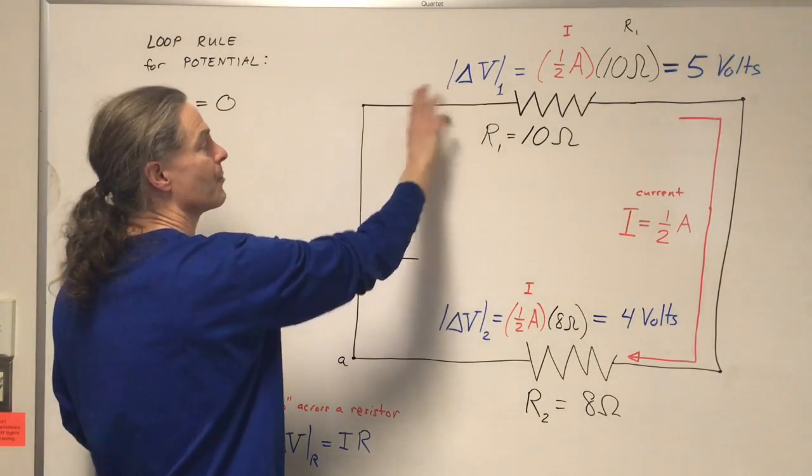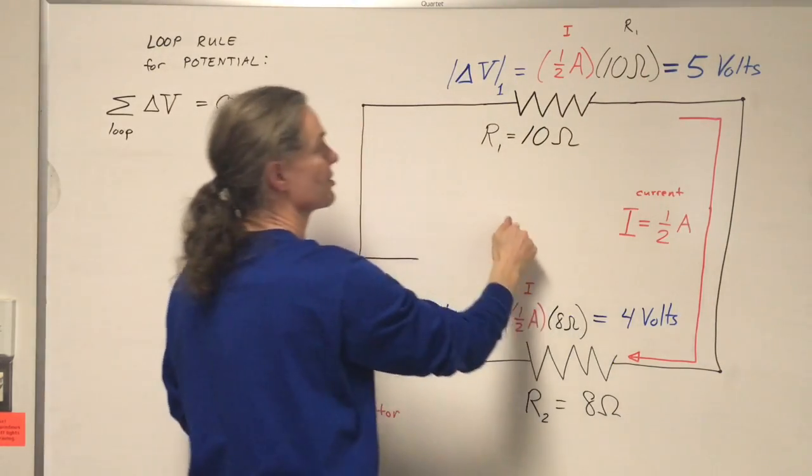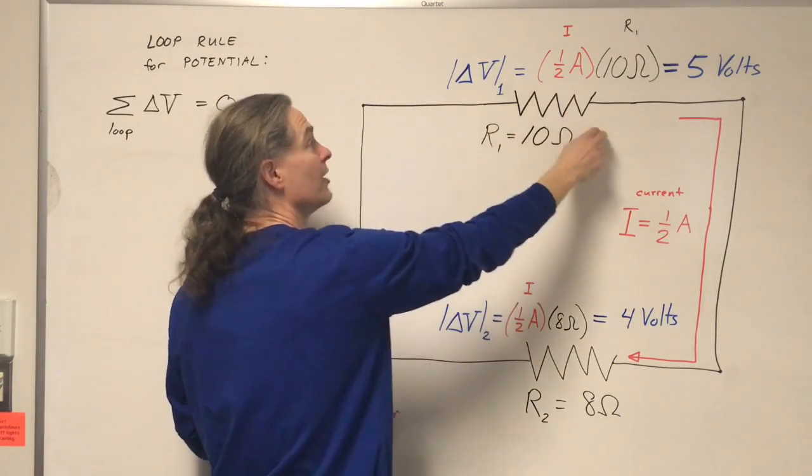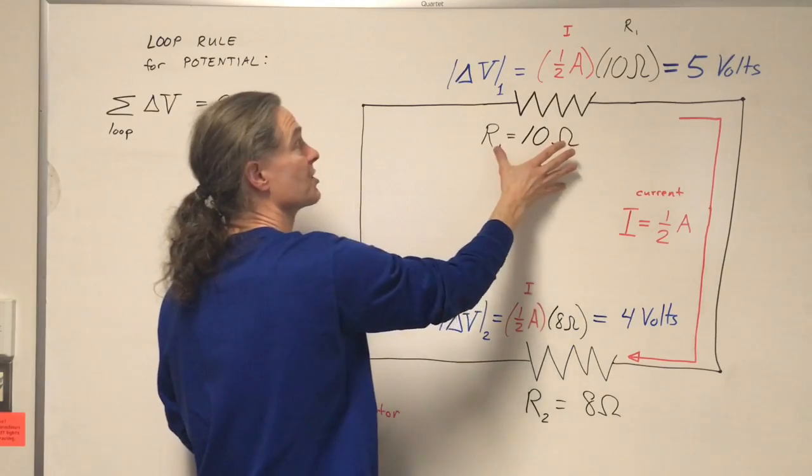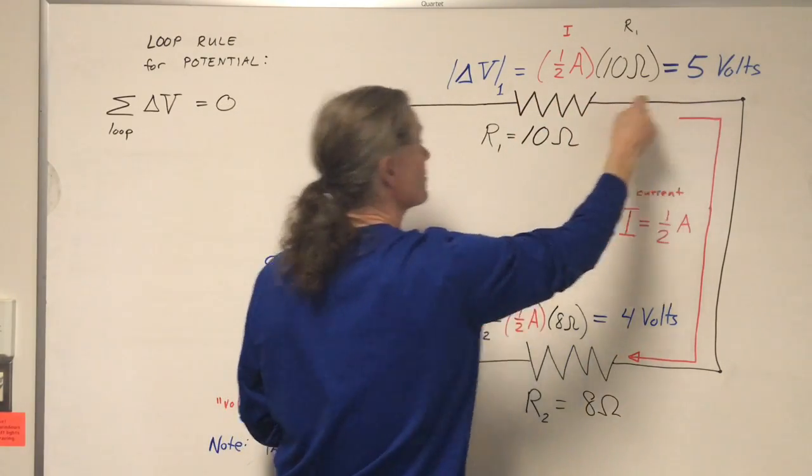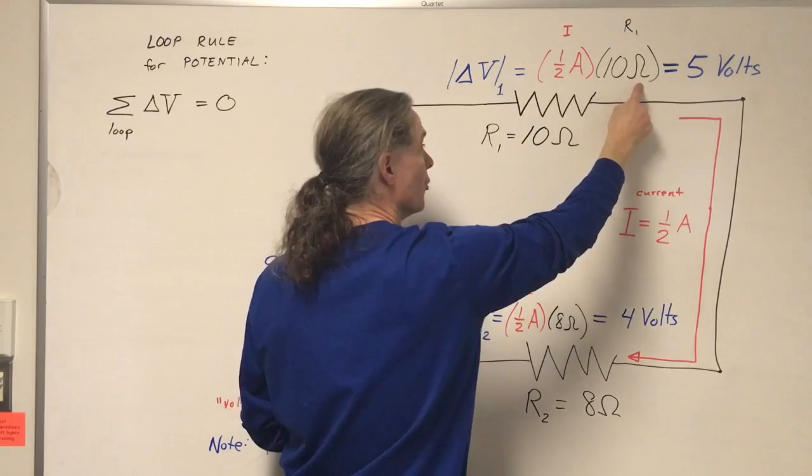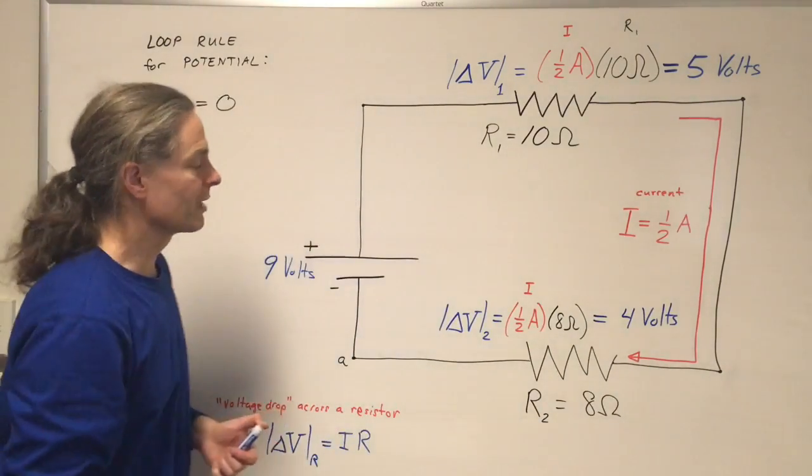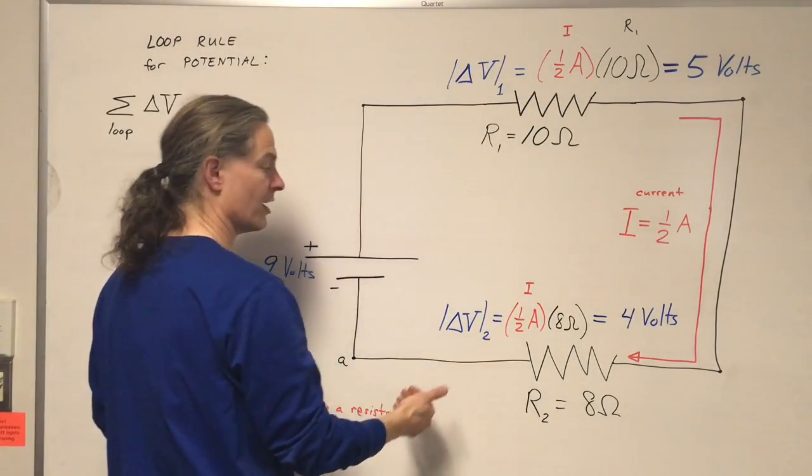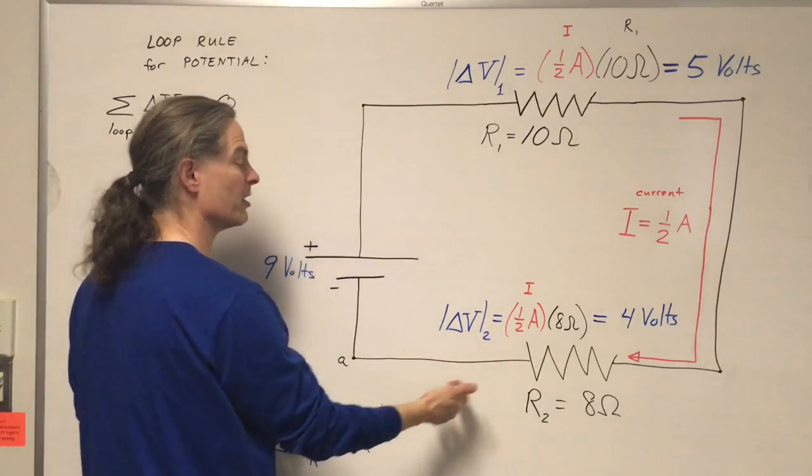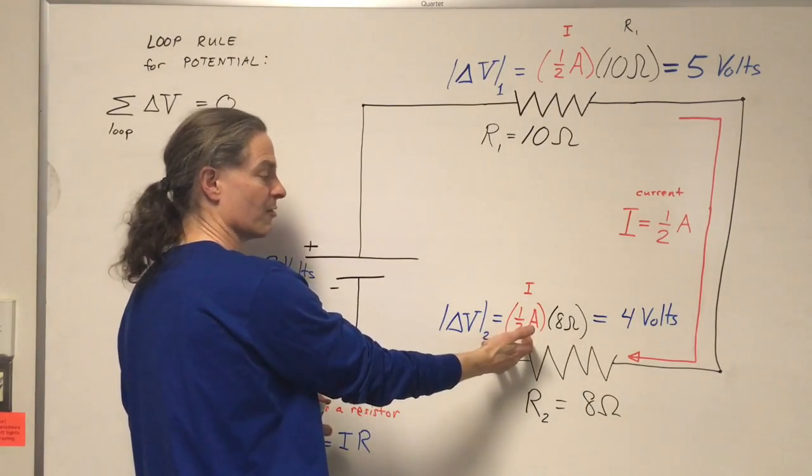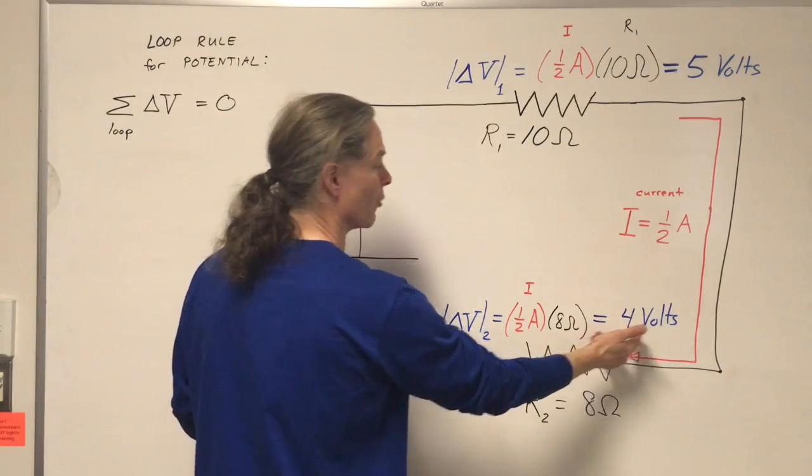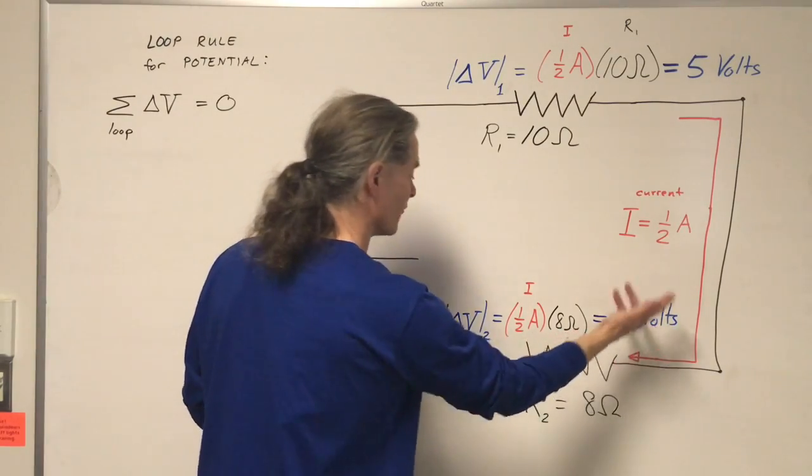The voltage drop across this 10 ohm resistor, with half an amp of current and 10 ohms of resistance, is half an amp times 10 ohms equals 5 volts. An amp times an ohm is a volt. Likewise, the voltage drop across the 8 ohm resistor is the product of the half amp of current and 8 ohms of resistance. That gives 4 volts.